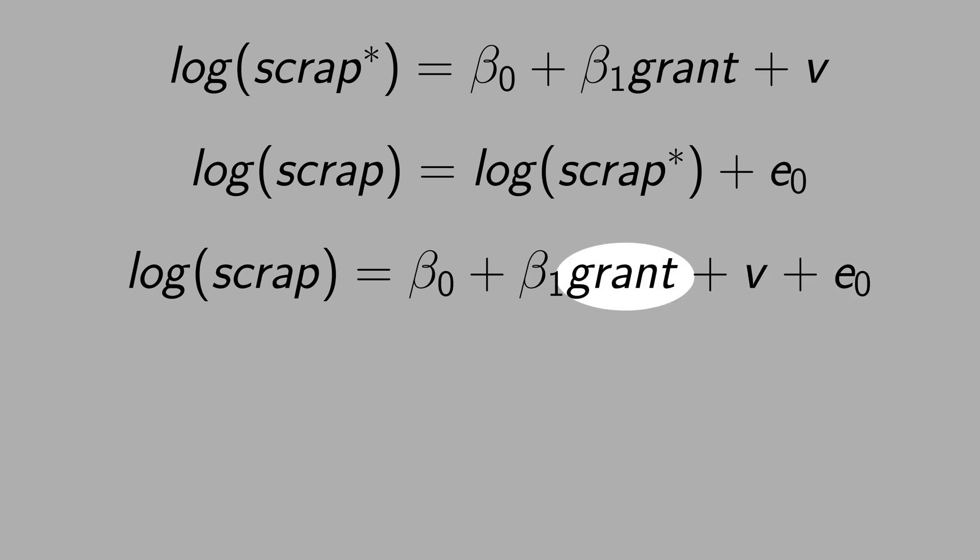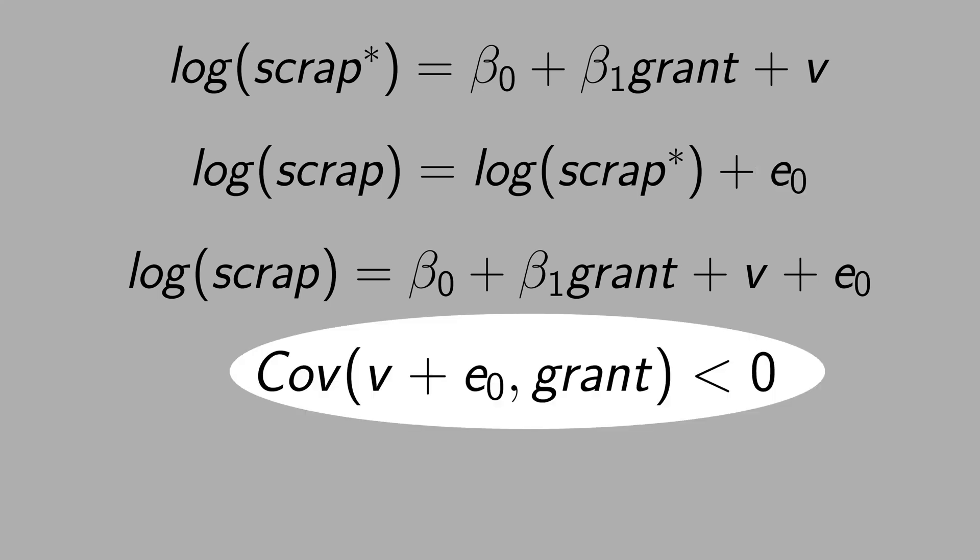Now, imagine that a firm that receives a grant is more likely to under-report the scrap rate. I'm telling you that this term here for firms that receive grants might be negative. In mathematical language, I'm claiming that the covariance of the error term v plus the measurement error and grant is negative.